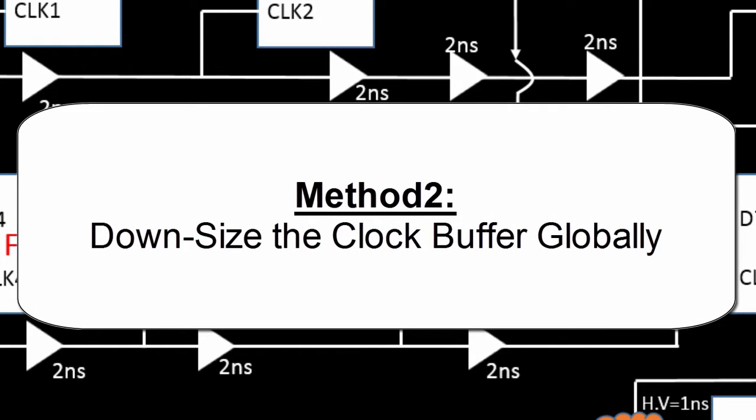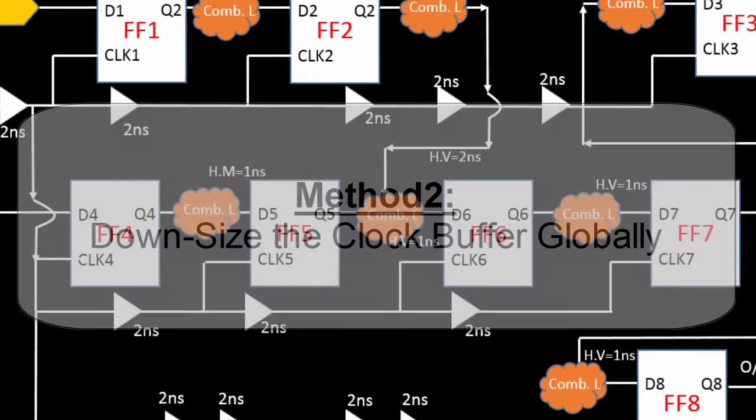So the method two: downsize the clock buffer globally. So when I am saying downsize, I mean to say that reduce the clock buffer delay globally. Before that, I just want to explain you this particular circuit.